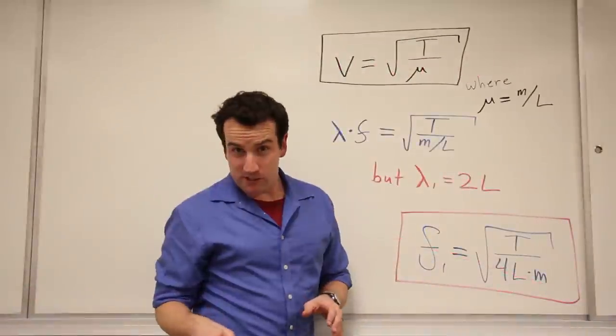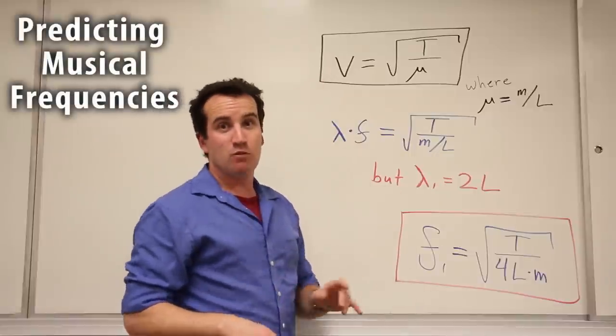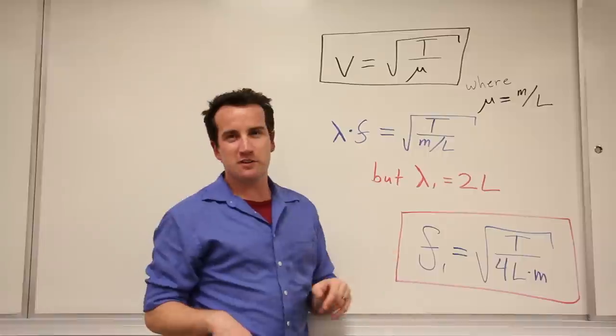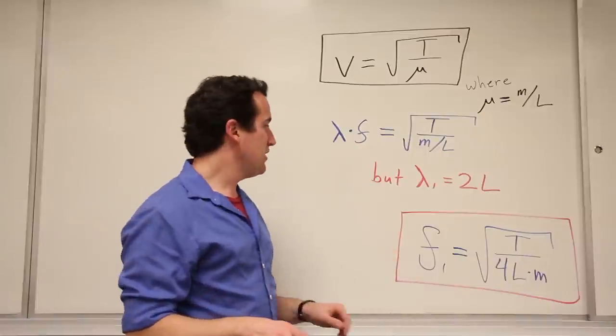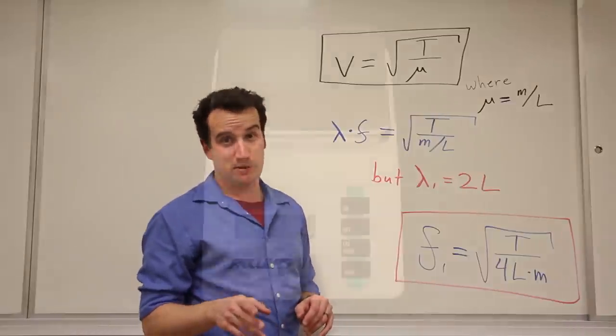But what about frequencies? Well, since velocity is wavelength times frequency, we can predict the frequency for any string. Since the wavelength of the fundamental is twice the length of the string, we find that the frequency is the square root of the tension divided by 4 times the length times the mass.